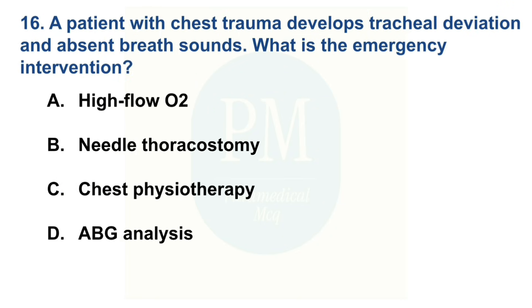A patient with chest trauma develops tracheal deviation and absent breath sounds. What is the emergency intervention? Option A: High flow O2. Option B: Needle thoracostomy. Option C: Chest physiotherapy. Option D: ABG analysis. The correct option is Option B: Needle thoracostomy.